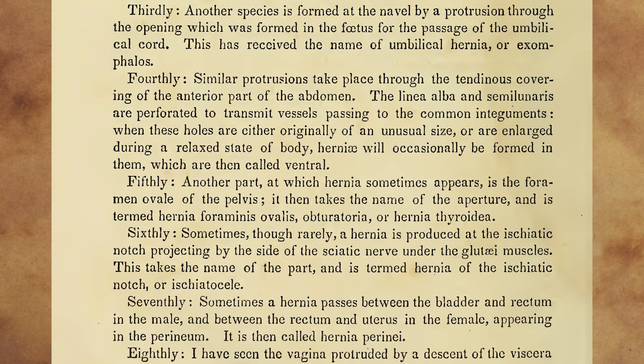Thirdly, another species is formed at the navel by a protrusion through the opening which was formed in the foetus for the passage of the umbilical cord. This has received the name of umbilical hernia, or exomphalos. Fourthly, similar protrusions take place through the tendinous covering of the anterior part of the abdomen. The linea alba and semilunaris are perforated to transmit vessels passing to the common integuments. When these holes are either originally of an unusual size, or are enlarged during a relaxed state of body, hernia will occasionally be formed in them, which are then called ventral. Fifthly, another part at which hernia sometimes appears is the foramen ovale of the pelvis. It then takes the name of the aperture, and is termed hernia foraminis ovalis, obturatoria, or hernia thyroidea. Sixthly, sometimes, though rarely, a hernia is produced at the ischiatic notch, projecting by the side of the sciatic nerve under the glutei muscles. This takes the name of the part, and is termed hernia of the ischiatic notch, or ischiatocoele.